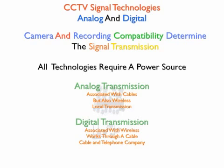There are two types of signal technologies used with a closed circuit TV system: analog and digital. The camera and the recording compatibility determine the type of signal that is transmitted. All cameras require a power supply to transport the signal, so all technologies require a power source. Signals are transmitted as analog and digital through cables and wirelessly through the airwaves. Radio station transmissions are a good example of how a true analog system works, while cell phones are a good example of how true digital transmission works.